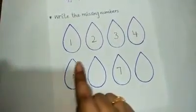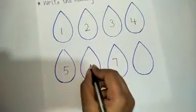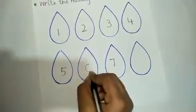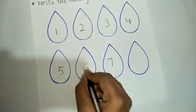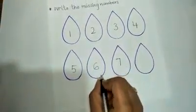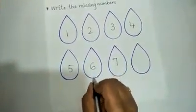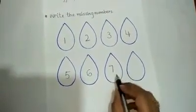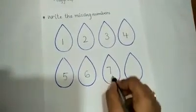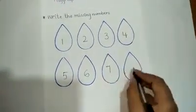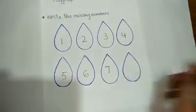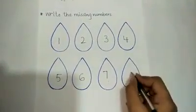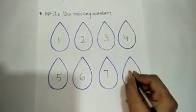What comes after five? Six! We are going to write number six. What comes after six? Seven! What comes after seven? Which number is missing over here? Eight! We are going to write number eight.